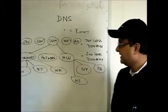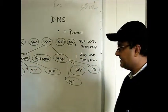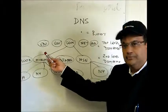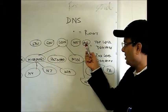The dot equals the root. Then we have top level domains. Top level domain examples are edu, gov, com, net, org, etc.